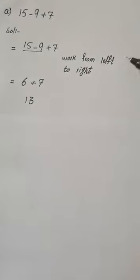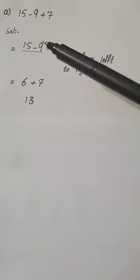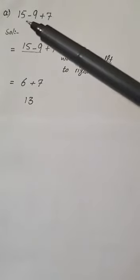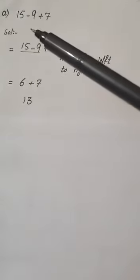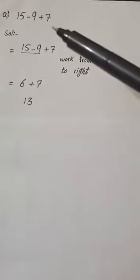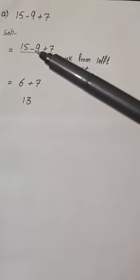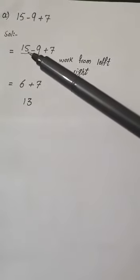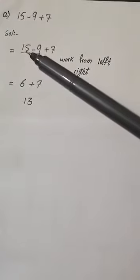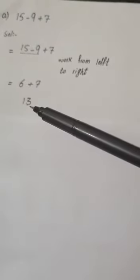Let's do some practice. We have the question 15 minus 9 plus 7. First, focus on the operations — we have two operations and they both belong to one family. When we have only one family in our question, we work from left to right. So: 15 minus 9 equals 6, then 6 plus 7 equals 13.